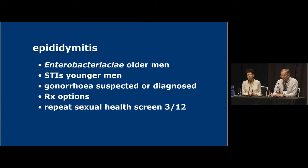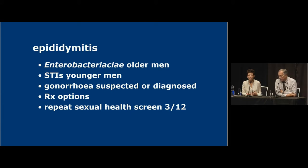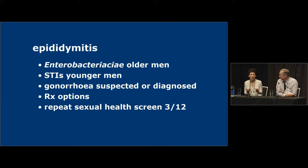Epididymitis — the age-group rule is: under 35, think about STIs; over 35, think about Enterobacteriaceae. But that doesn't reflect the Tinder and Grindr generation — there are men over 35 who are at risk of STIs. Testing is important. The differentiation around age 35 is whether you empirically treat for UTI-based causes like E. coli, or whether you empirically treat for STI. That comes down to the clinical history, which is why we're doctors.